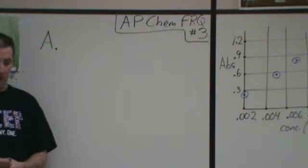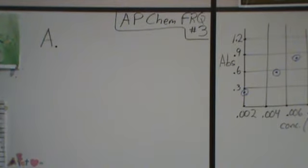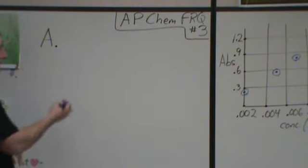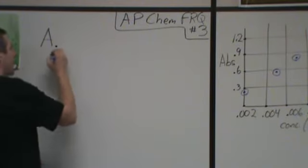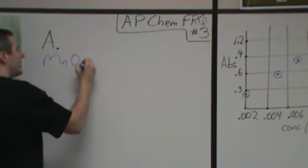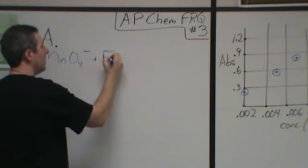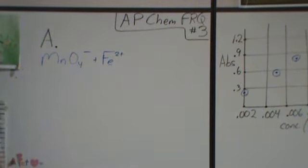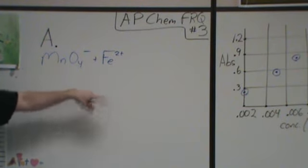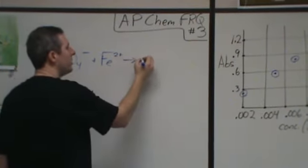So this particular one is very common. Do not be surprised if this comes up on an AP test. It says that iron 2+ is added to permanganate under acidic conditions. Part A says write out the balanced reaction for that. First of all, some of this stuff needs to be memorized. You're not expected to be able to figure these out.